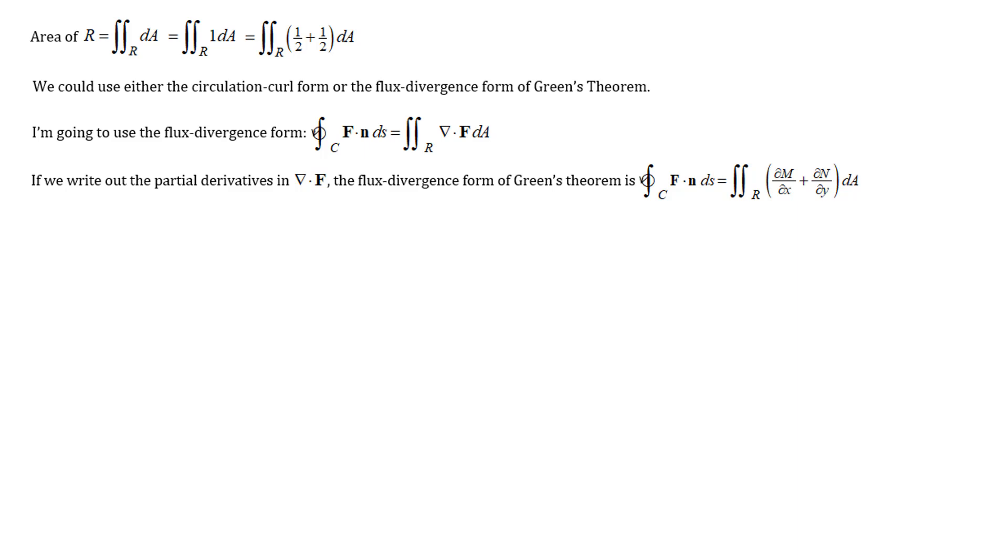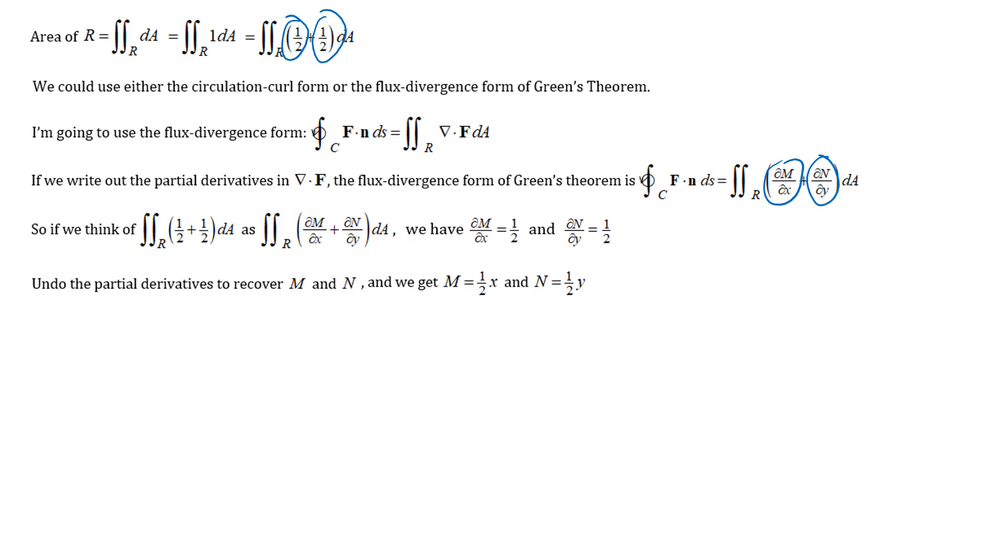So the idea is that I want to write that divergence so that I can match it up with my area integral. So I've split this up so that I can pair up my del m dx with my one half and then my del n dy with my other one half. The idea now is that I want to use that to create this vector field F that would have been part of Green's Theorem. So I'm going to undo those partial derivatives to recover my m and n. I'm going to integrate del m del x with respect to x and del n del y with respect to y. So I'll get m equals one half x and n equals one half y.